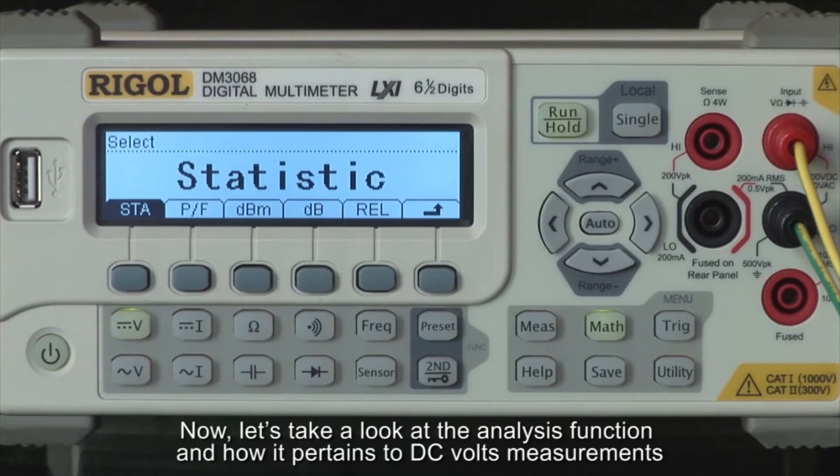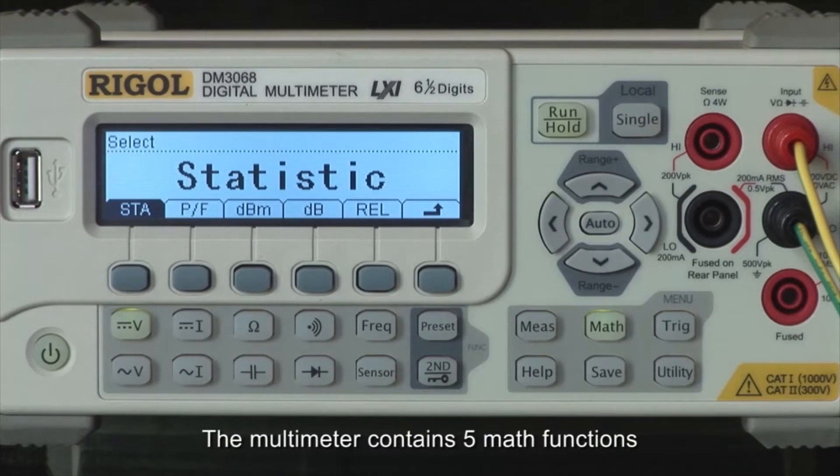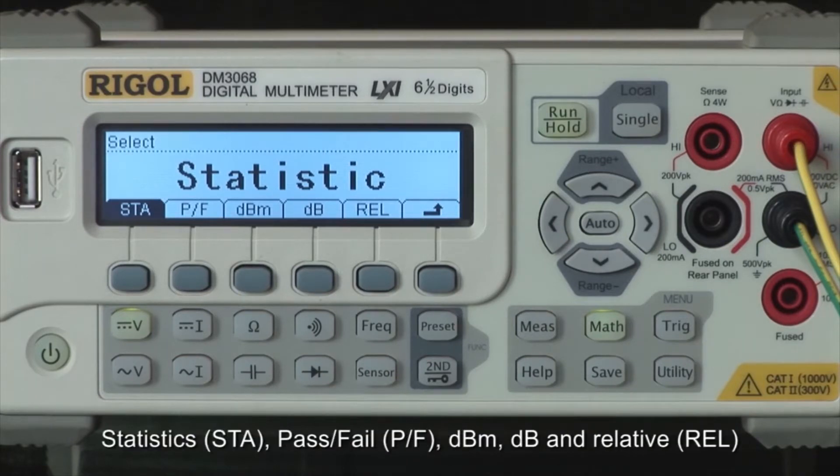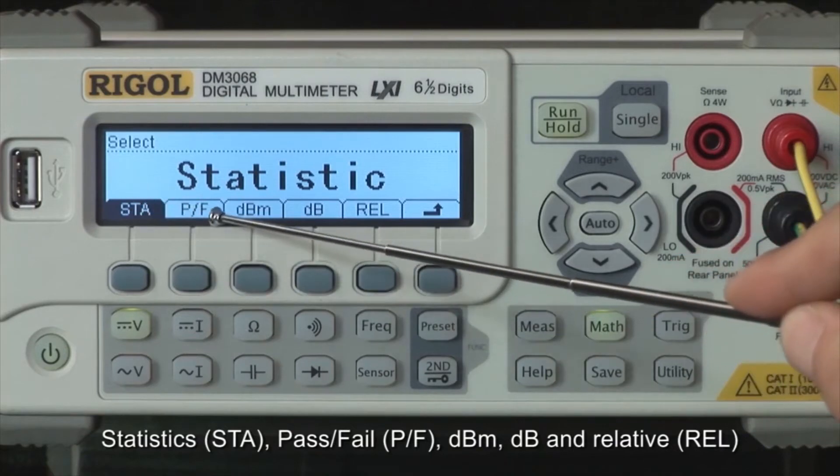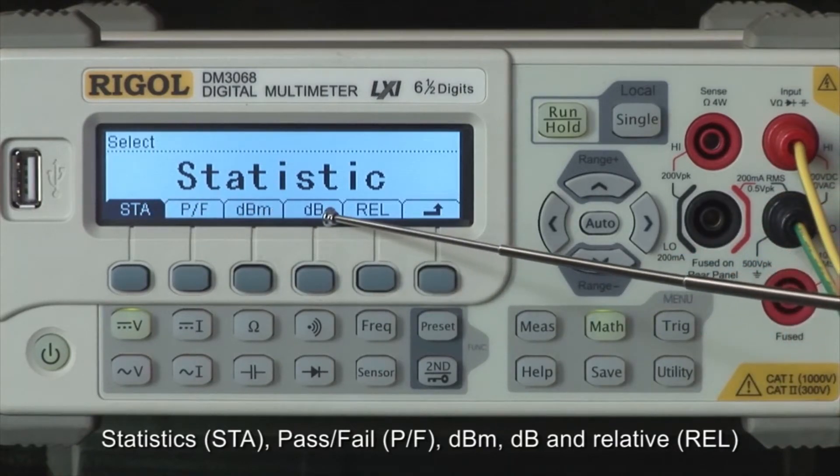Now let's take a look at the analysis function and how it pertains to DC Volts measurements. The multimeter contains five math functions: statistics or STA, pass-fail or PF, DBM, DB, and relative or REL.